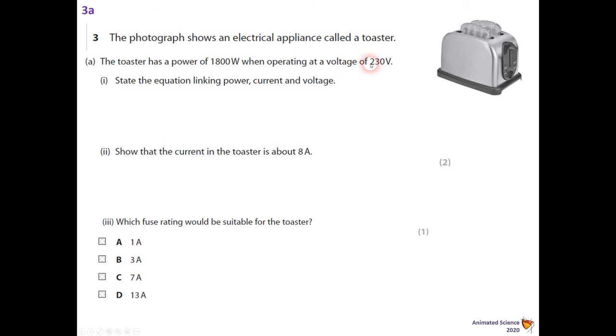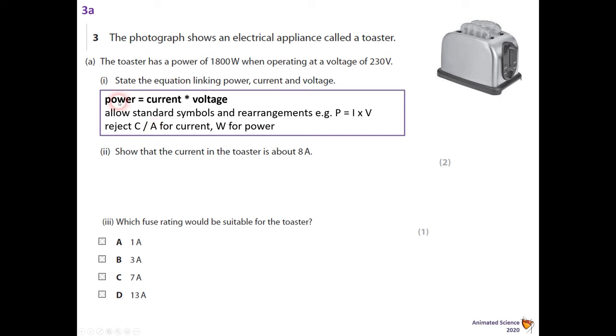Let's state the equation linking power, current and voltage. So real simple: power equals current times voltage. They would allow standard symbols and rearrangement, e.g. P equals I times V. They would reject C or A for current and W for power.